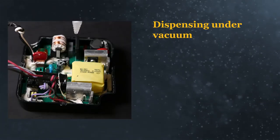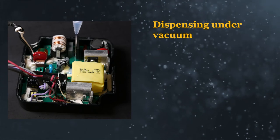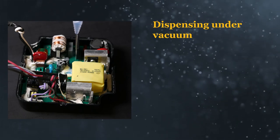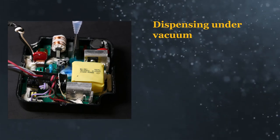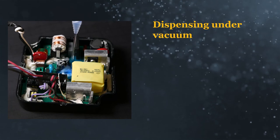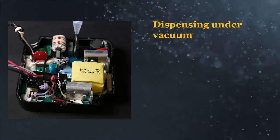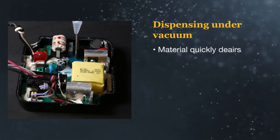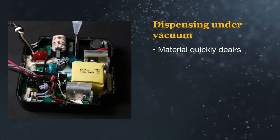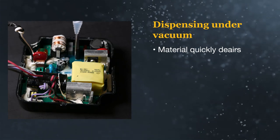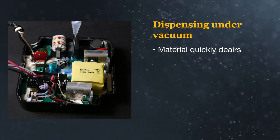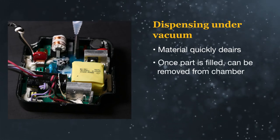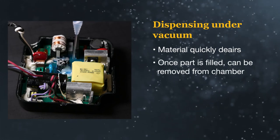In manufacturing, it is also possible to dispense material directly onto a part inside a vacuum chamber. This is called dispensing under vacuum. With this process, the applied silicone material almost instantly de-airs as it is filling, and there typically is no bubbling or foaming. Once the part is filled, it can be removed from the vacuum chamber.